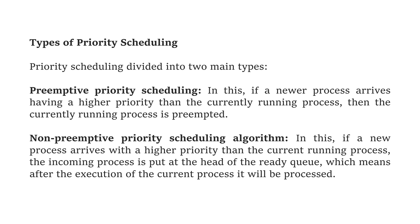In non-preemptive priority scheduling, if a new process arrives with a higher priority than the currently running process, the incoming process is only put at the head of the ready queue. The currently running process is not preempted, which means that after the execution of the current process, the new process will be executed. So it is put at the head of the ready queue.